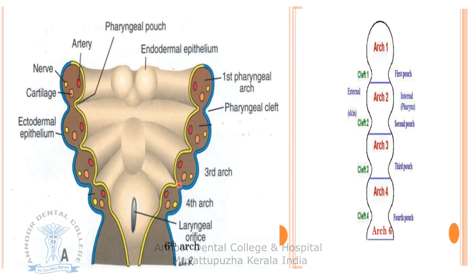Five rod-like thickenings of mesoderm form the wall of the foregut. There is also a sixth arch; the fifth arch disappears, leaving five remaining. When the ends of the arches on the right and left side meet in the midline, they form the floor of the pharynx. In the interval between the two arches, the endoderm is pushed outward to form a series of pouches known as pharyngeal pouches, and opposite each pouch there is an ectodermal cleft formed by ectoderm dipping inward.